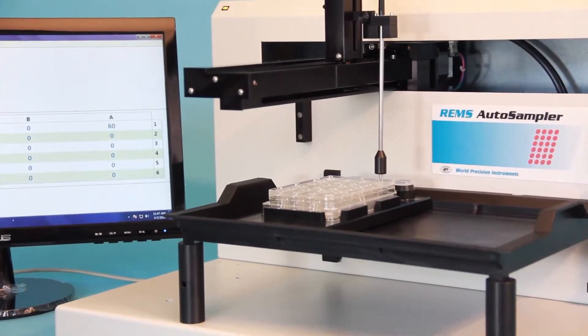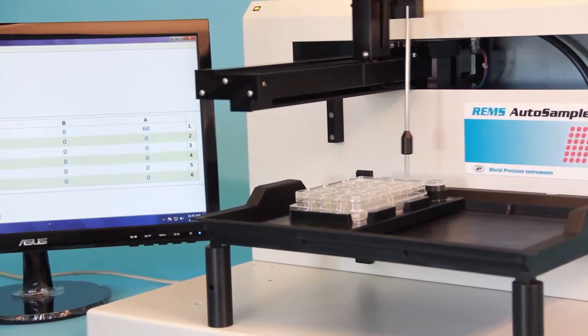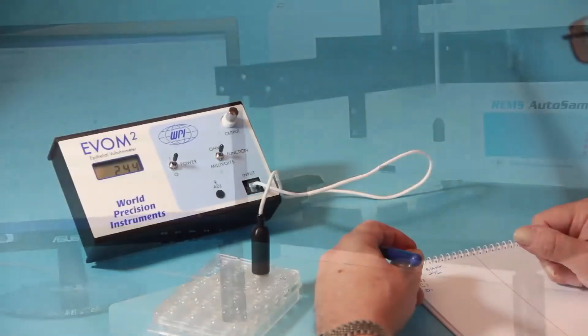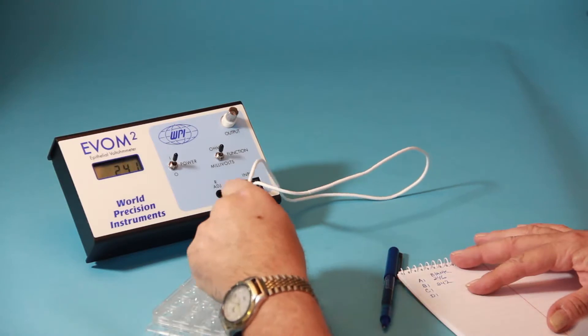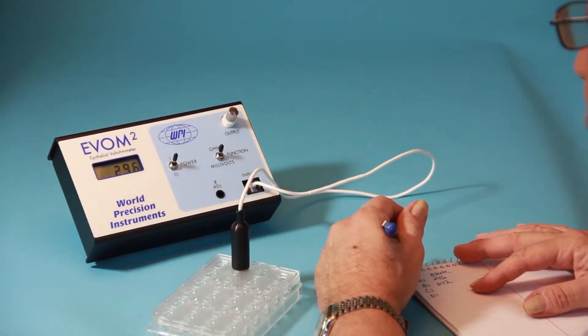WPI's REMS can record tier for 96 wells in as little as 5 minutes. In addition to the significant time savings, automated tier sampling eliminates a common source of inaccuracy typically associated with variances in electrode placement during manual measurement taking.